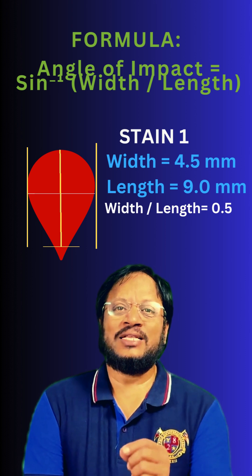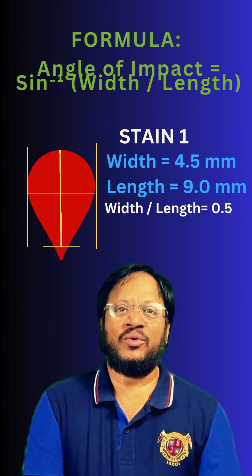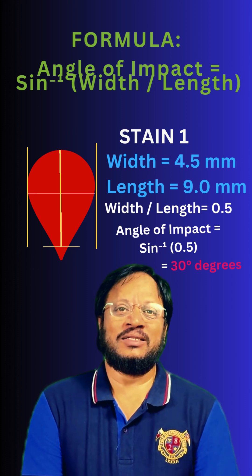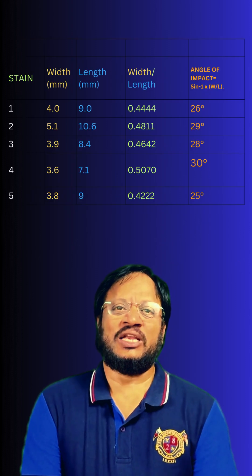Now take the inverse sine, that is sine inverse of 0.5, and you get approximately 30 degrees. Repeat this for each stain.